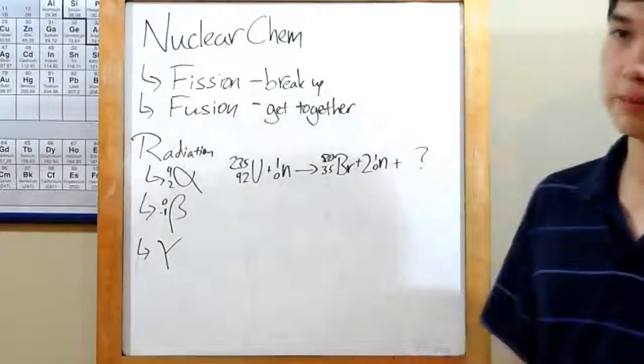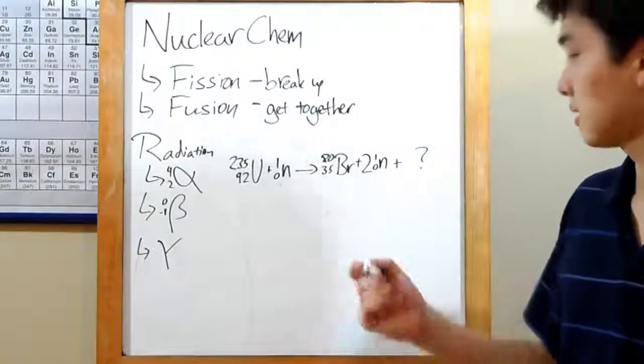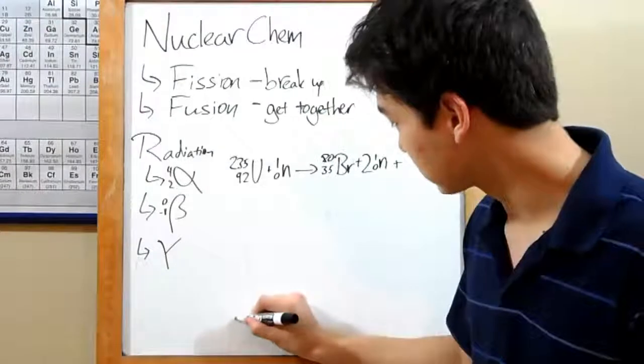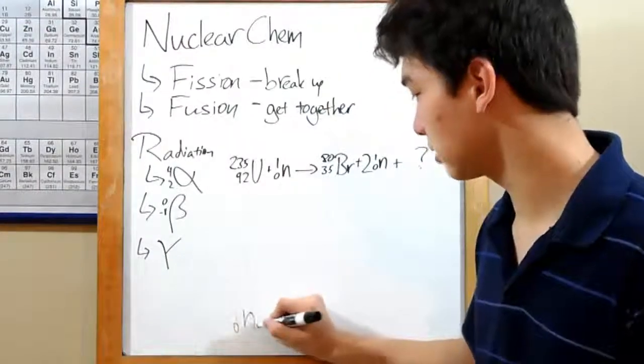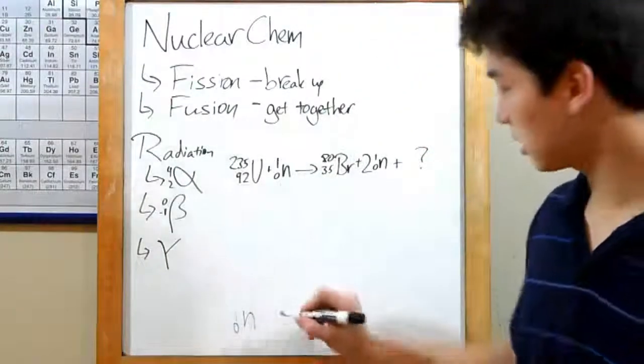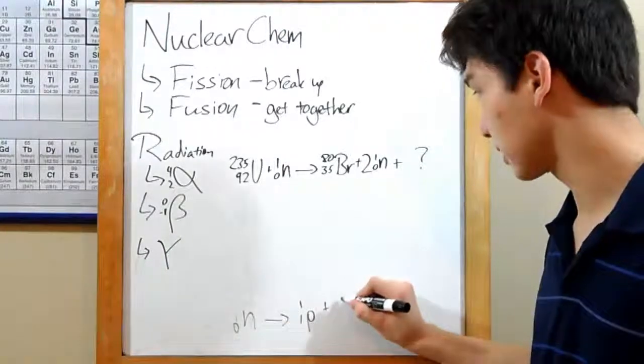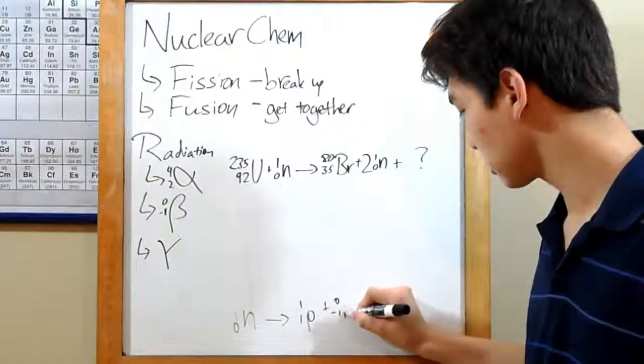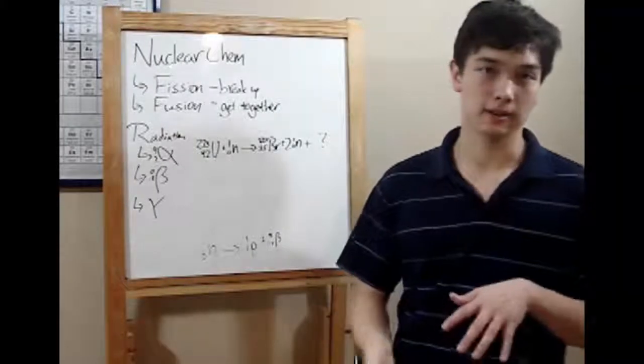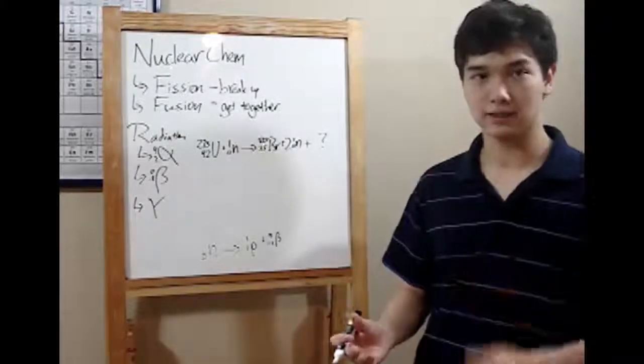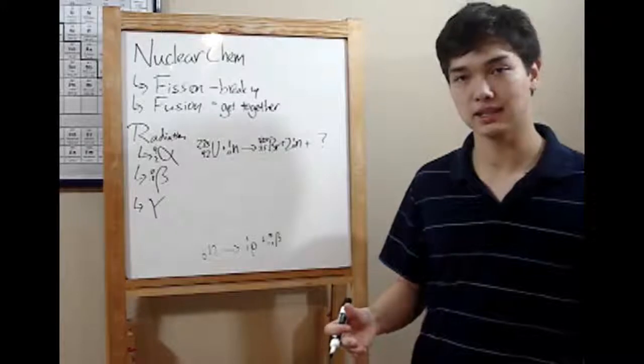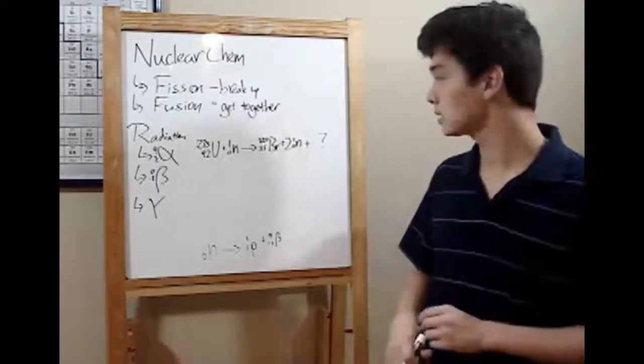Then there's a beta particle. A beta particle is just an electron, but not any normal kind of electron. A beta particle is an electron from the nucleus. See, a neutron can break up and form a proton and a beta particle. A neutron is effectively a beta particle plus a proton. The negative charge on the electron cancels out the positive charge on the proton for zero total charge.